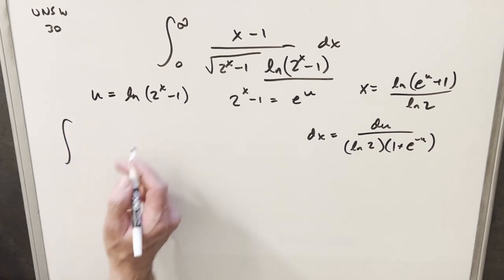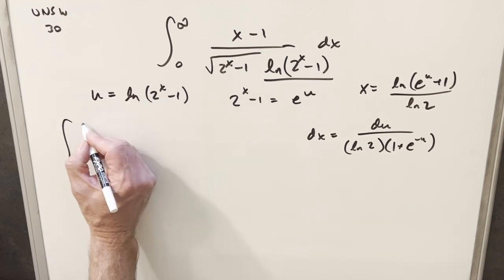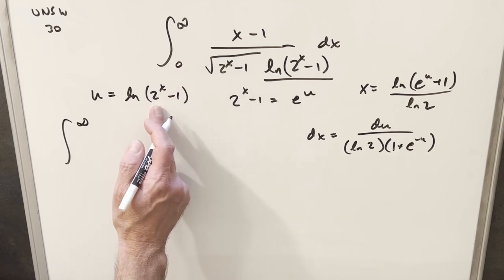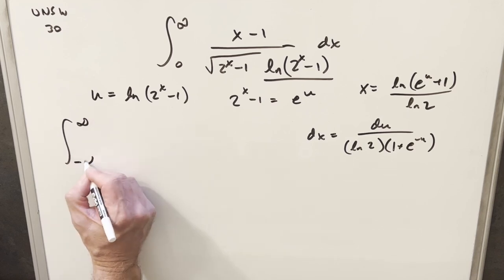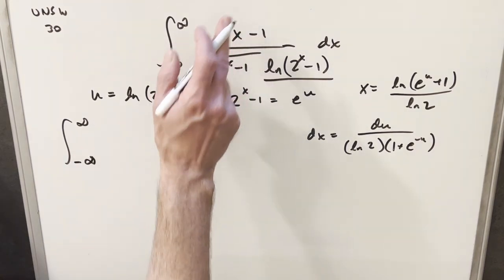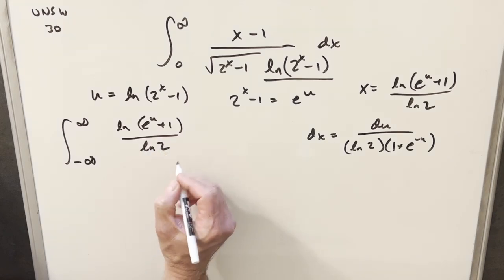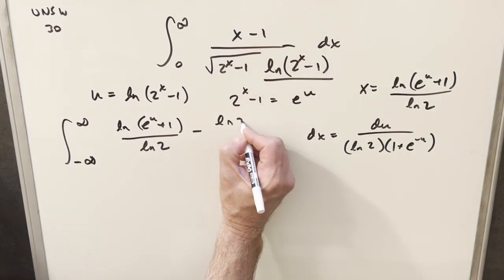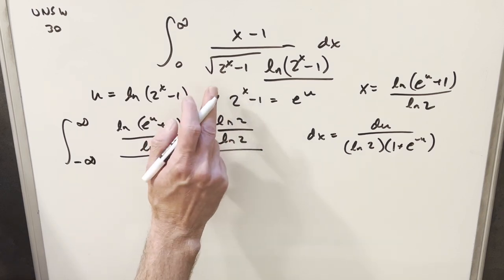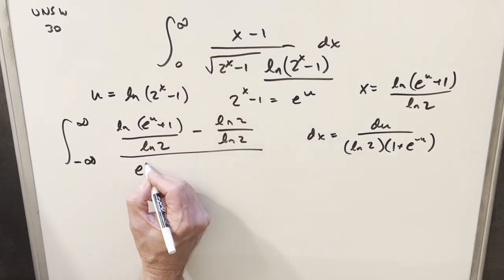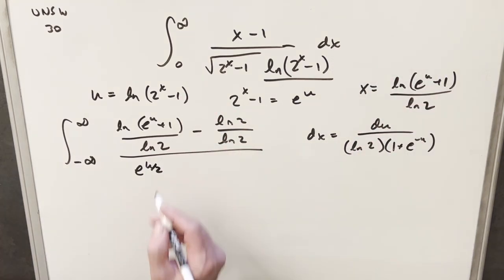Now I'll go ahead and make my substitution. Plugging in infinity gives natural log of infinity, which is just infinity. Plugging in 0: 2 times 0 minus 1, so natural log of 0 happens as u approaches minus infinity. For the numerator, x becomes natural log of e to the u plus 1 over ln 2. For 2x minus 1, we have e to the u, which in the square root becomes e to the u over 2. And natural log of 2x minus 1 is just u.